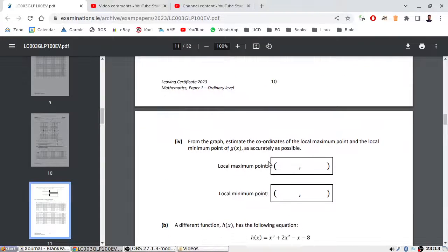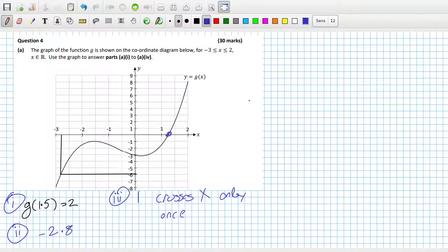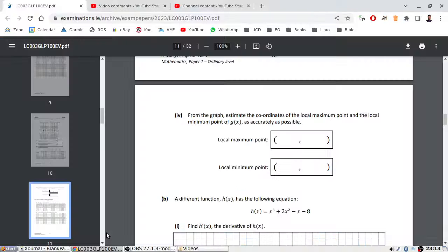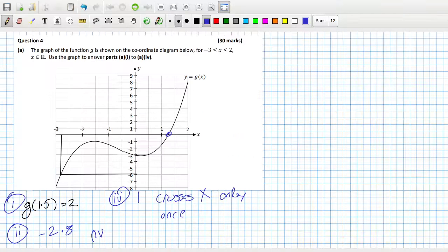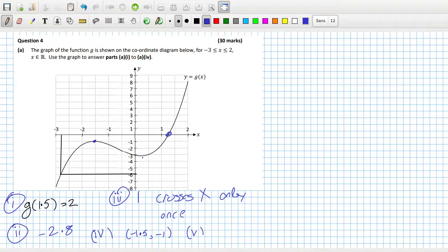From the graph, estimate the coordinates of the local max and the local min. Okay, the local max would be, it looks like it's here at minus 1.5 and minus 1. Oh sorry, yeah local max. And the local min is this guy here, which is about 0.25 and minus 3.25.